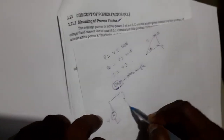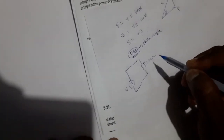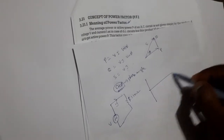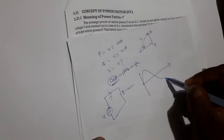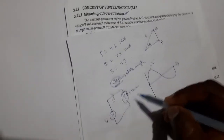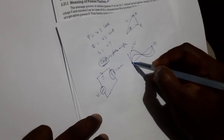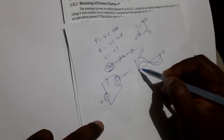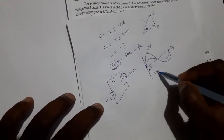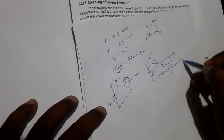For example, consider a simple circuit with an AC voltage and a resistance of 10 ohms. If I draw the waveform, this is the voltage curve. Since we are using a purely resistive circuit, the current waveform starts at the same point as the voltage — both are in phase. Here the phase angle is zero degrees. Cos 0° equals 1, which is also called unity power factor.